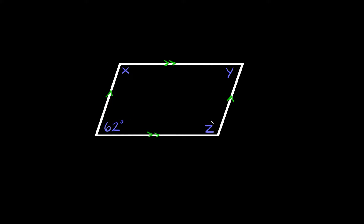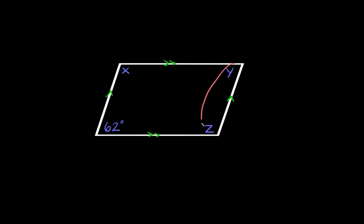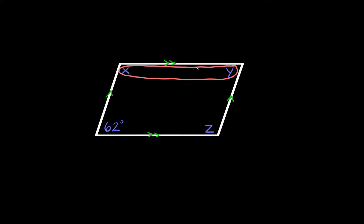Same thing with this 62 and this z — these are consecutive angles because they're next to each other. Same thing with y and z, and same thing for y and x up here — these are also consecutive because they're next to each other. Now the thing about consecutive angles is that they are supplementary, or in other words, they add up to 180 degrees.